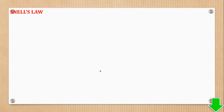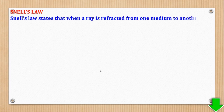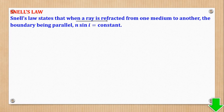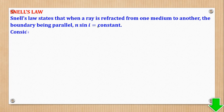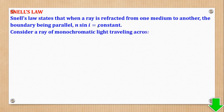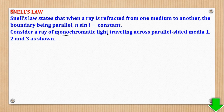We also need to know Snell's law. Snell's law states that when a ray is refracted from one medium to another with parallel boundaries, N sin i is equal to a constant. We use monochromatic light — light of a single wavelength — such as red, blue, or violet light. If we use white light it will be dispersed, as we shall see in the next video on dispersion of light.